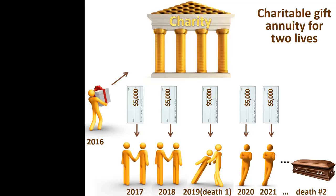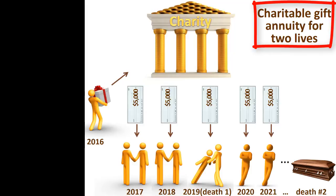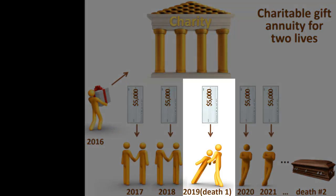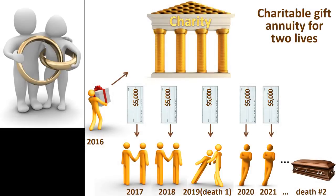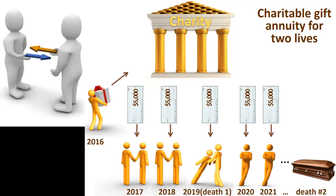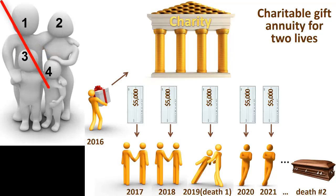The most common variation on the traditional gift annuity is the gift annuity that pays for two lives. This means that the annuity payments will continue to be made until the death of the last of the two individuals to die. The payment is not reduced at the death of the first to die of the two annuitants. Most commonly, these gift annuities pay for the lives of the donor and the donor's spouse. However, there are no requirements that either annuitant be related to the donor. A gift annuity cannot pay for more than two lives.